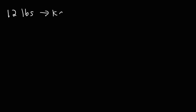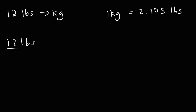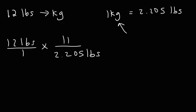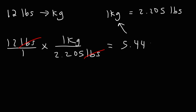Now let's work backwards and convert pounds into kilograms. When you want to go from pounds to kilograms, you need to divide by 2.205. So we have 12 pounds over 1. Since we have pounds on top of the first fraction, we put 2.205 pounds on the bottom of the second fraction and 1 kilogram on top. The unit pounds cancel, so we divide 12 by 2.205, which gives us 5.442 kilograms.